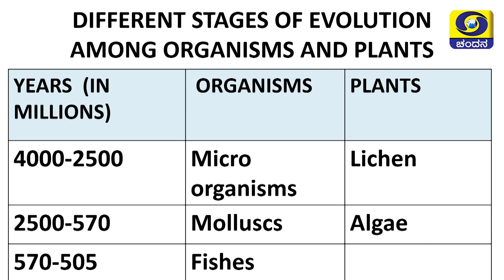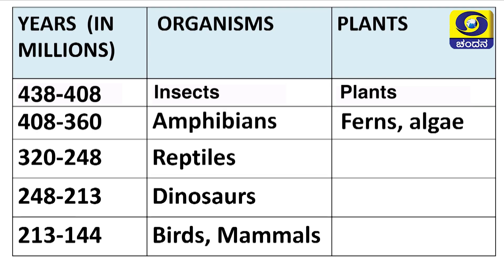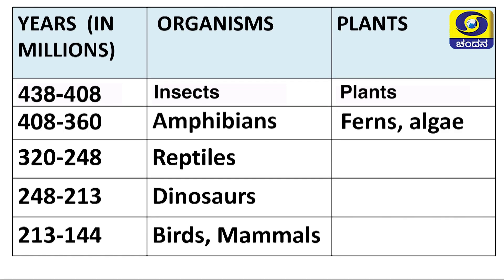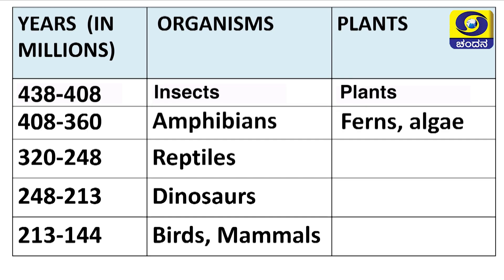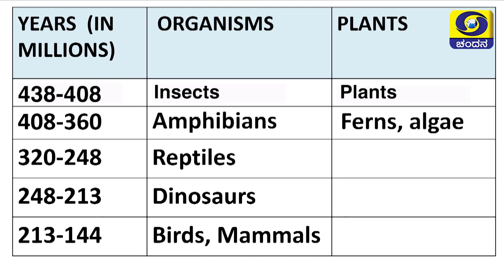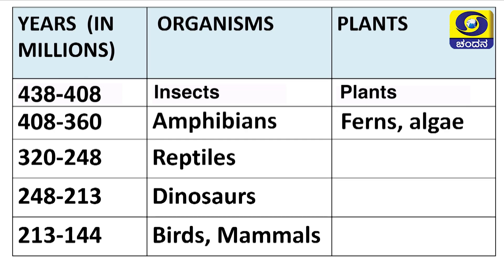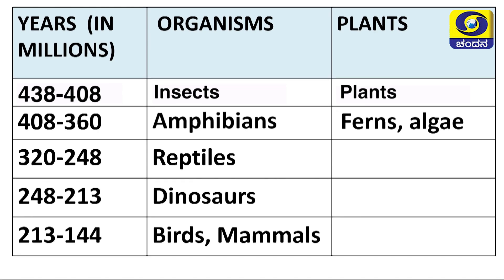From 570 to 505 million years ago, fishes evolved on earth. Between 438 to 408 million years ago, insects originated. Between 408 to 360 million years ago, it was the amphibians — animals which can live both on land and water, for example the frog. Among plants, ferns and algae originated. Between 320 to 248 million years ago, reptiles evolved — animals which crawl with the help of their body, such as snakes.